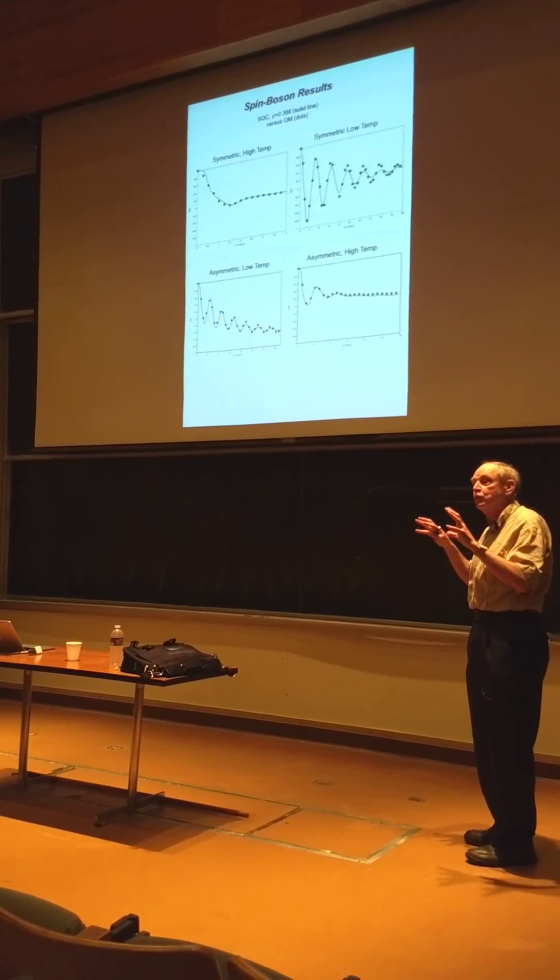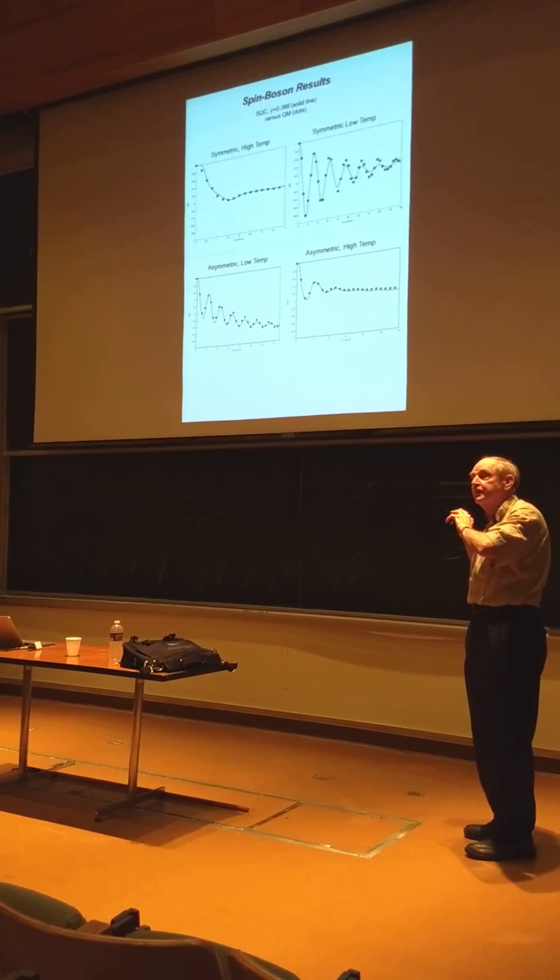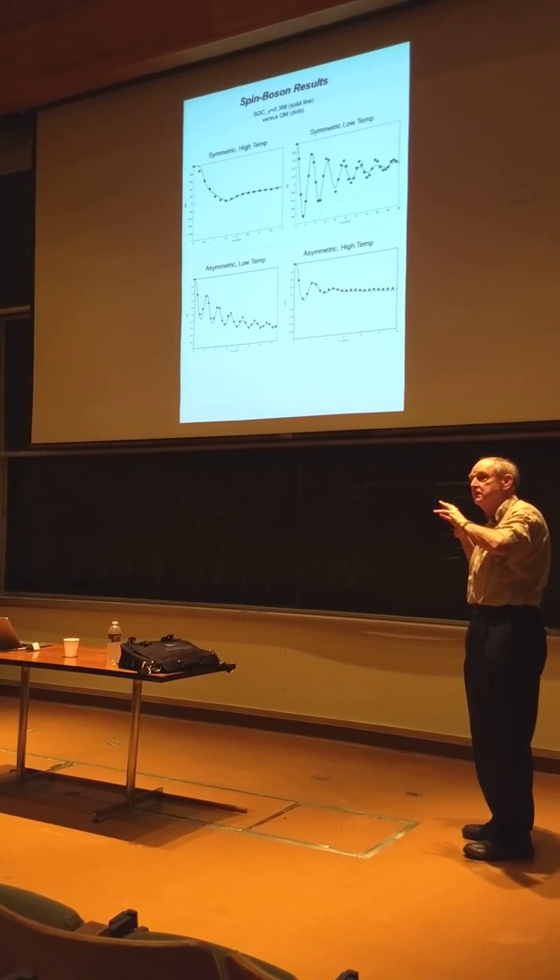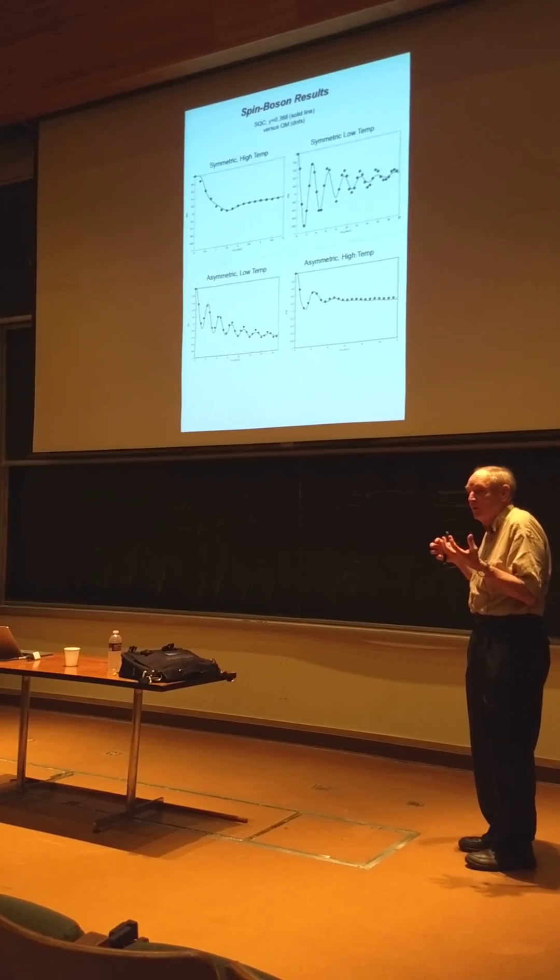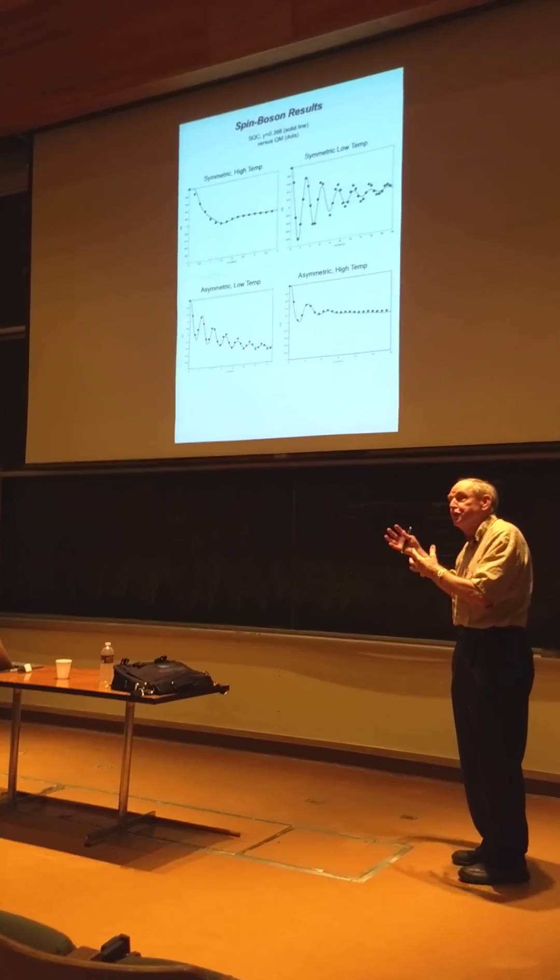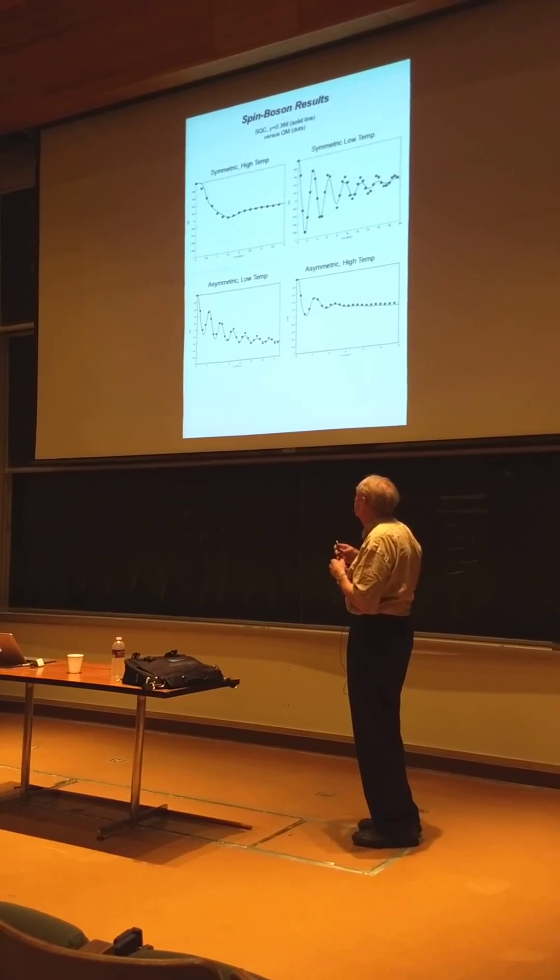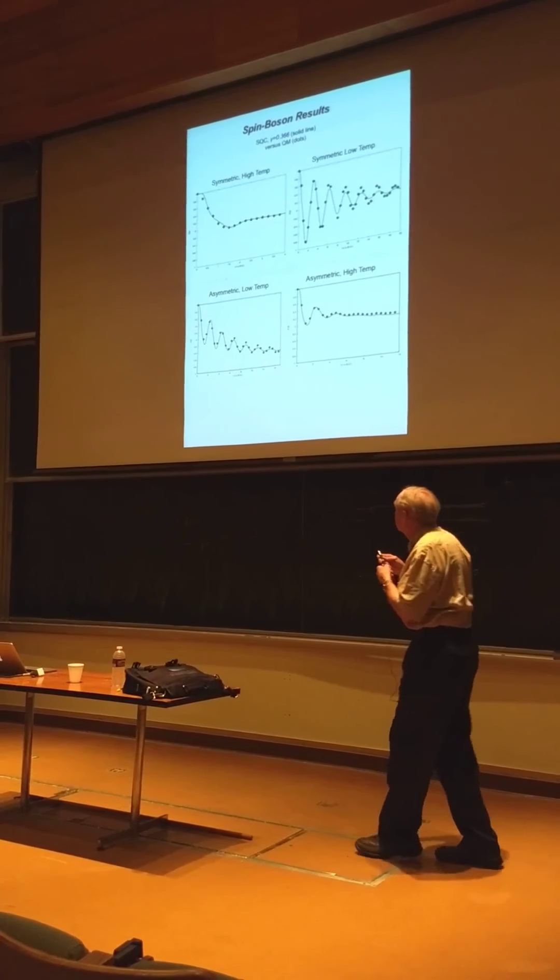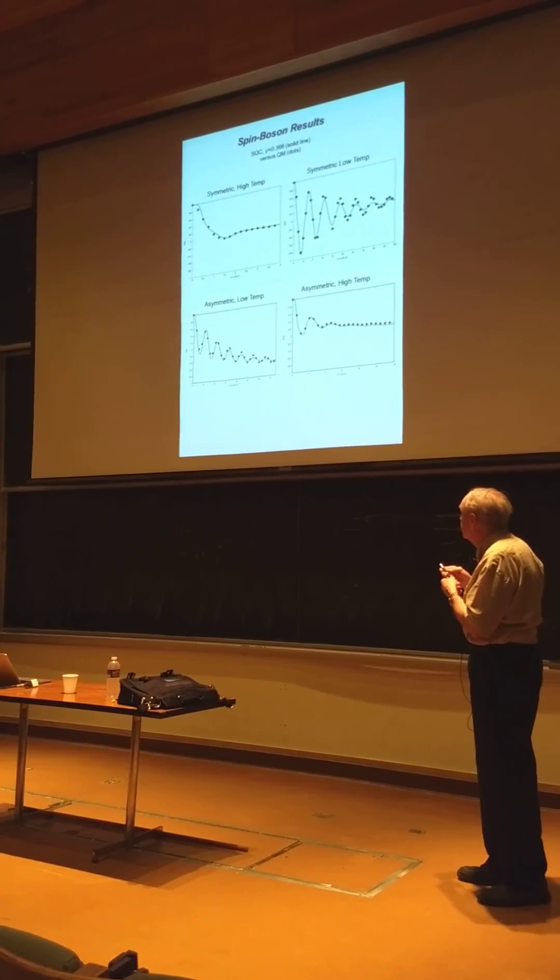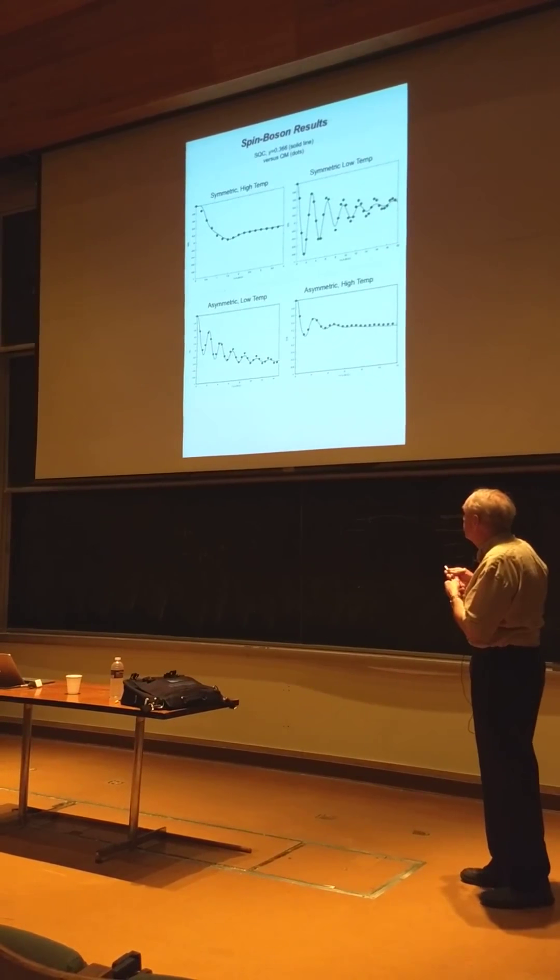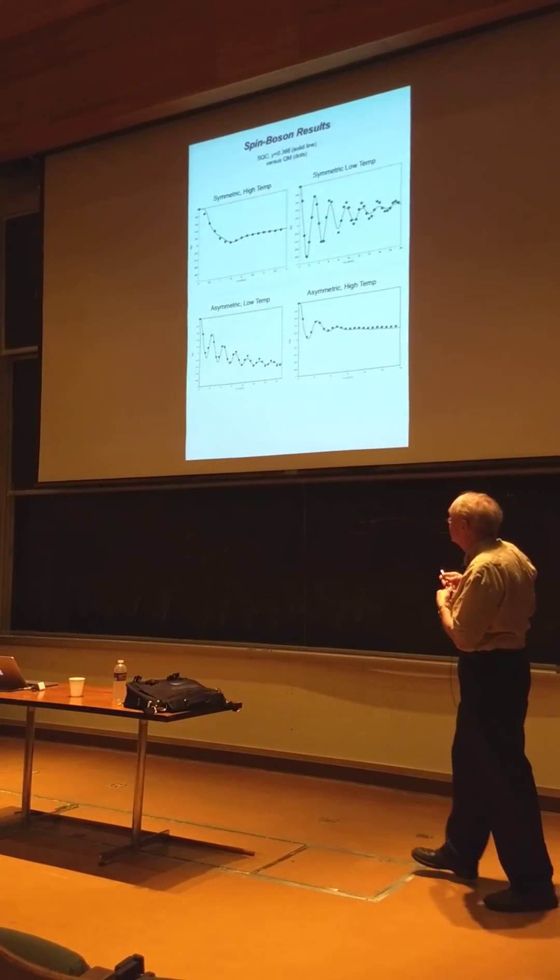And so this is plotting the population difference in the two states. So you can also, ultimately, that they are dephased by the environment of the nuclear bath, and that's the population difference. Now, you see, it's not perfect. The classical results are dephasing a little faster than the quantum results, but it's still reasonably good.